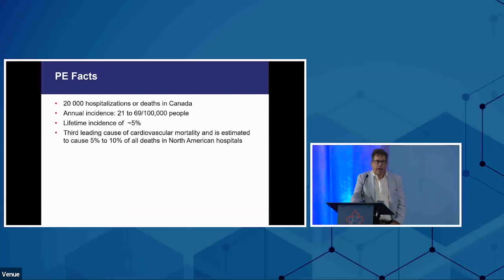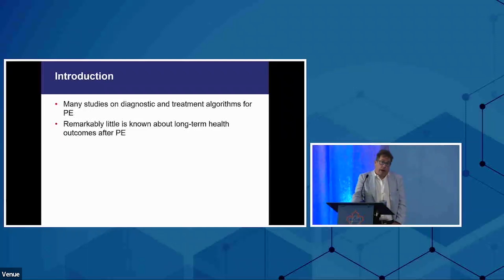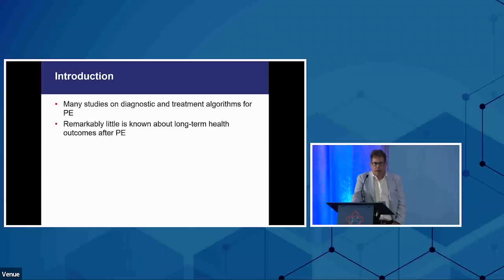Just a little about PE — it's a common and important disease. There are about 20,000 hospitalizations or deaths in Canada, with a lifetime incidence of about 5%. It's the third leading cause of cardiovascular mortality, and despite everything we do, thromboembolism contributes to about 5% to 10% of all deaths in North America. We now have good diagnostic, treatment, and prevention algorithms, largely thanks to Canadian research. But until relatively recently, we didn't have much information about the long-term healthcare outcomes of pulmonary embolism.